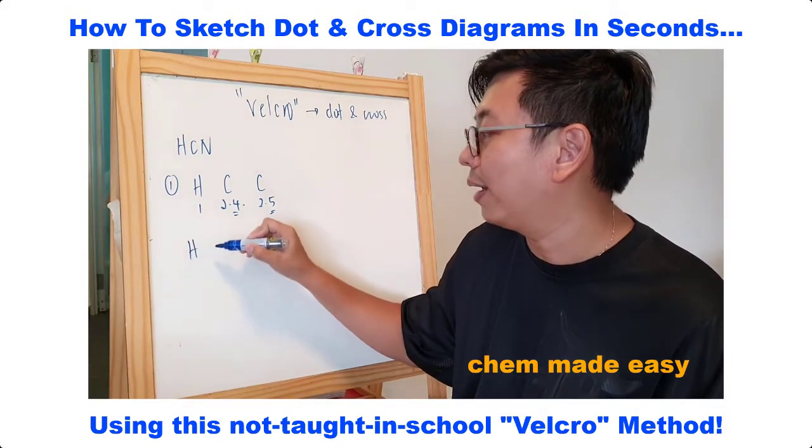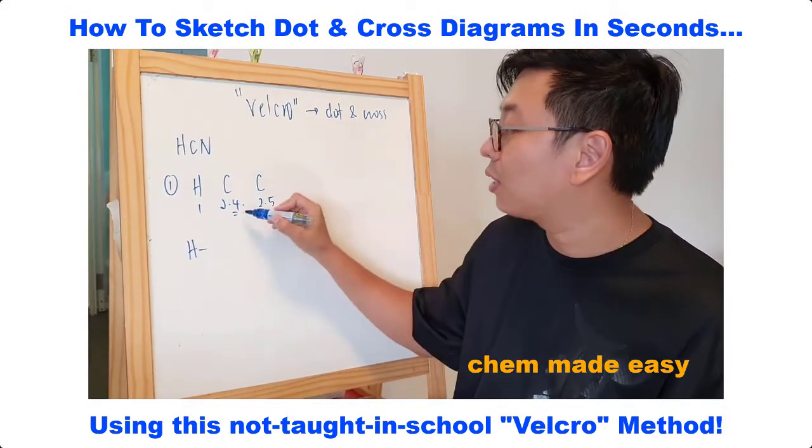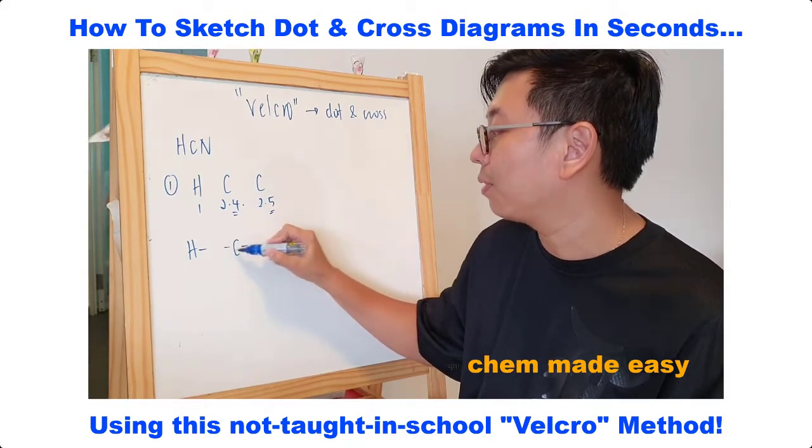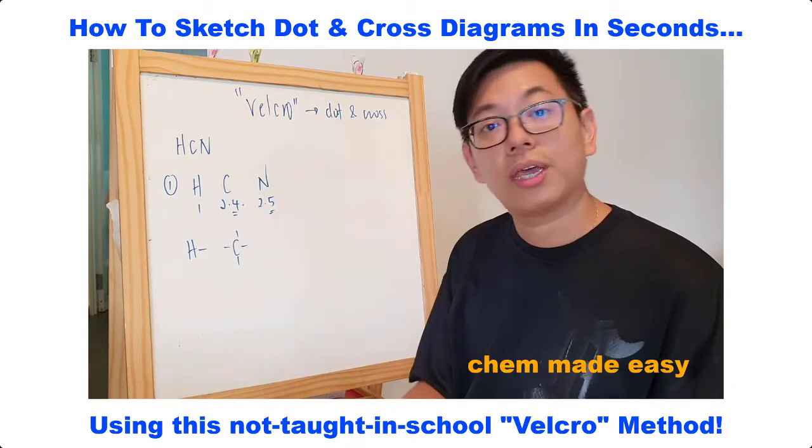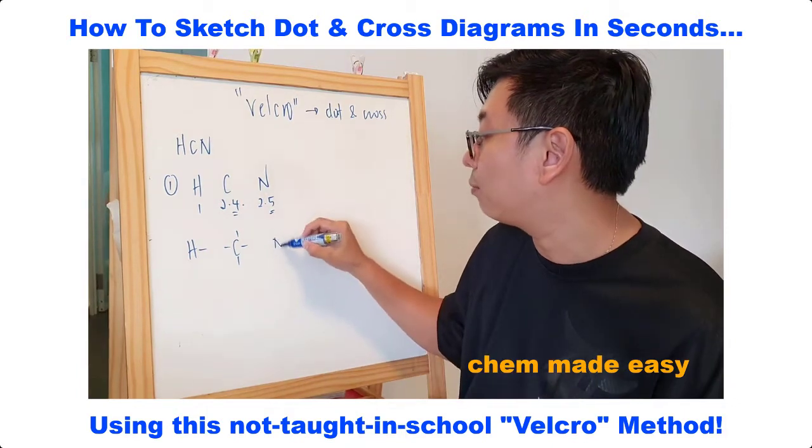Hydrogen needs to gain one and therefore it will form one bond. Carbon needs to gain four electrons, therefore it will form four bonds. And nitrogen needs to gain three electrons and therefore it will form three bonds.